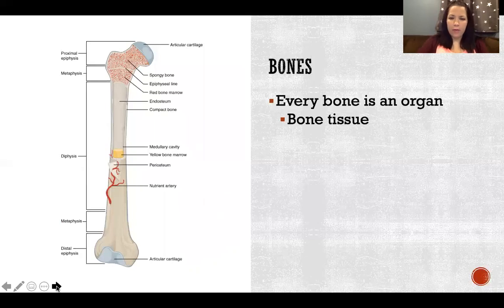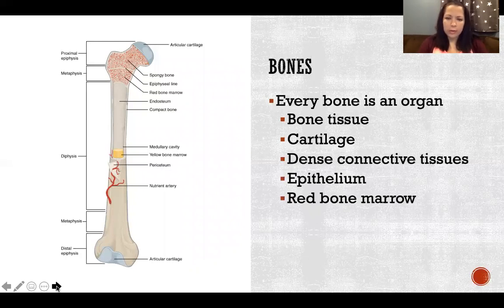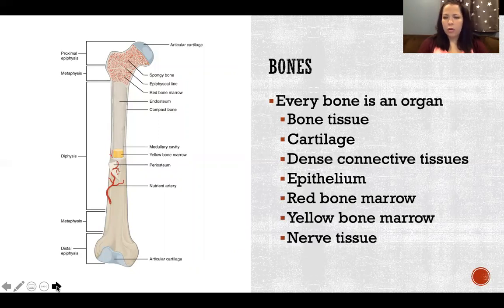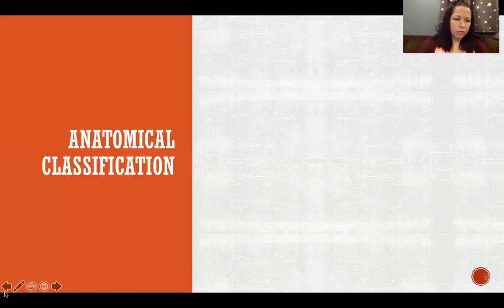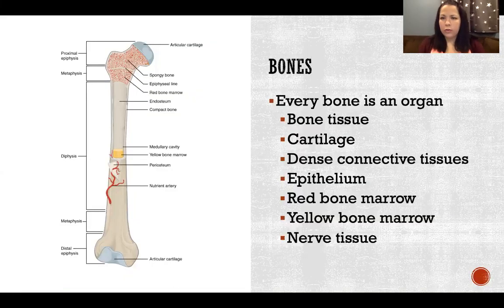Bones are made up of lots of tissues: bone tissue (as discussed in another video), cartilage, dense connective tissues, epithelium, red bone marrow, yellow bone marrow, and nerve tissue. So there are lots and lots of different types of tissues. Hopefully in anatomy you talked about your types of tissues.